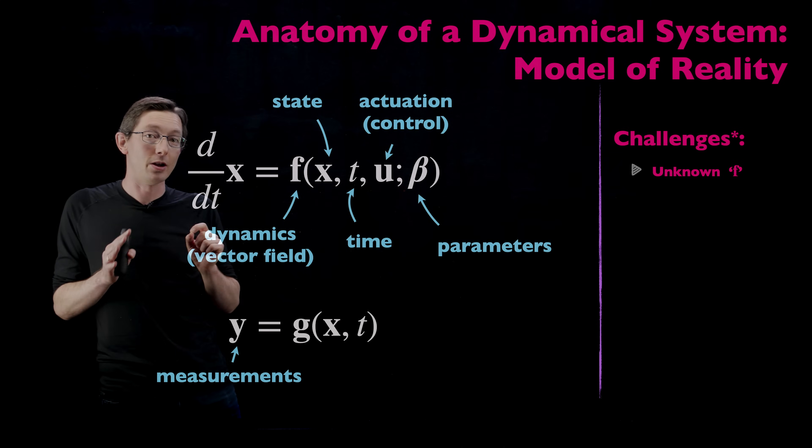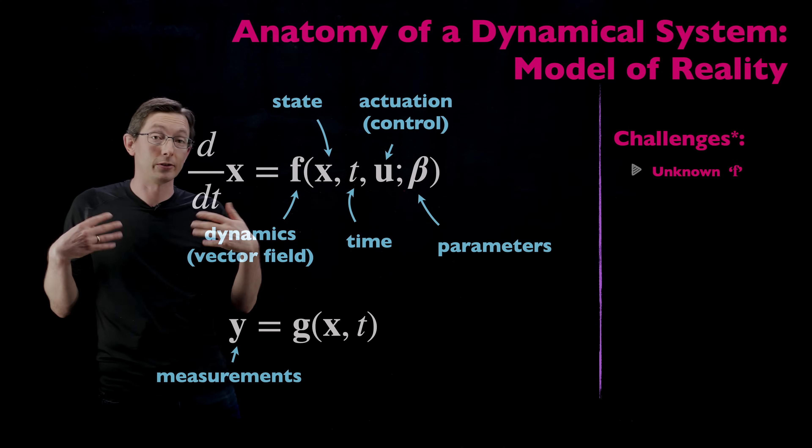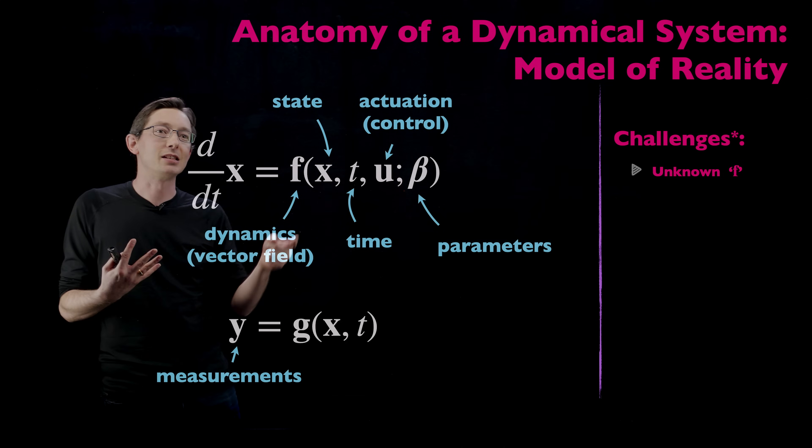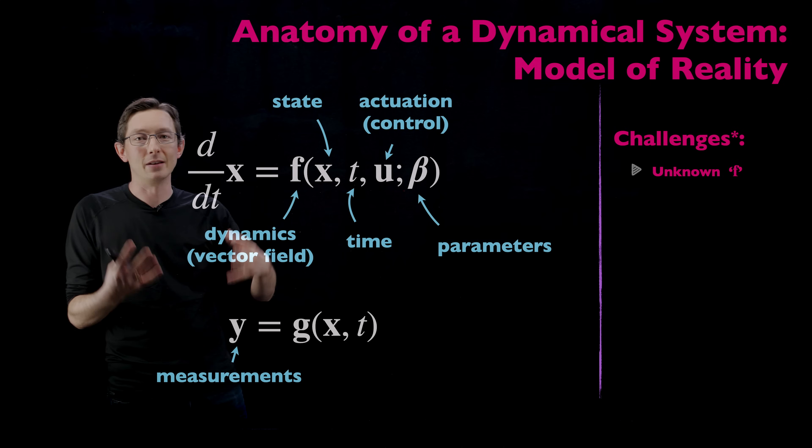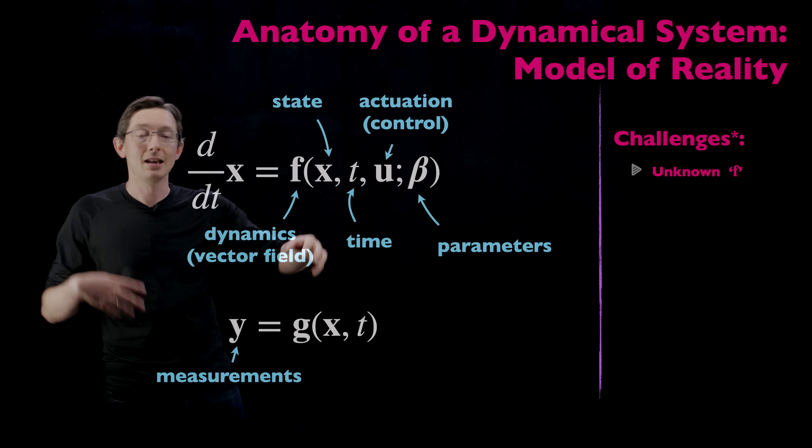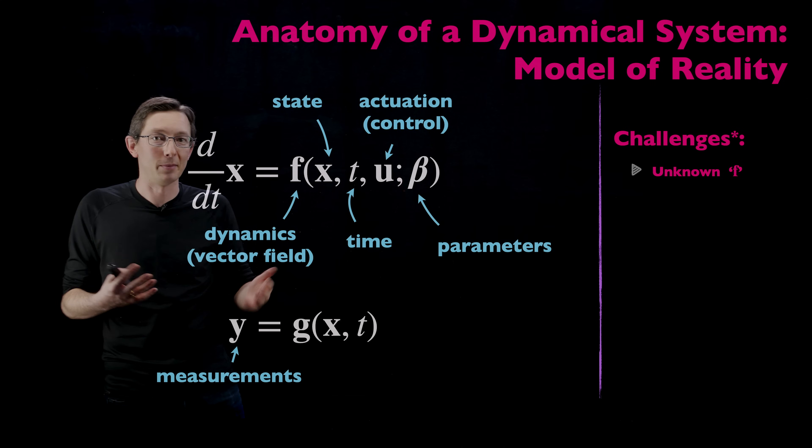Even in systems where you do know F, like the Navier-Stokes equations for a fluid, it might be far too complicated to use. And so we would need to learn a reduced order model in terms of the things we care about, in terms of a less descriptive state X that captures the big things I care about in my fluid.